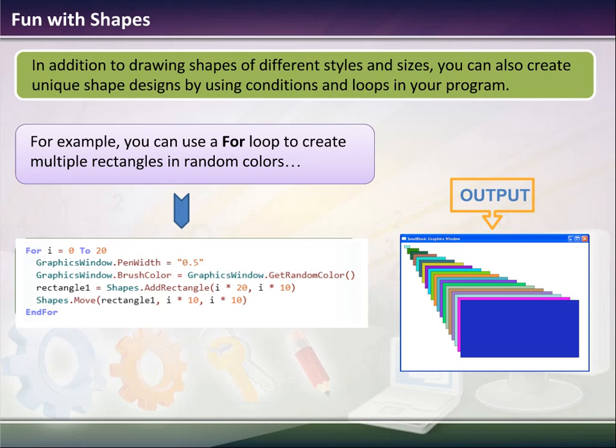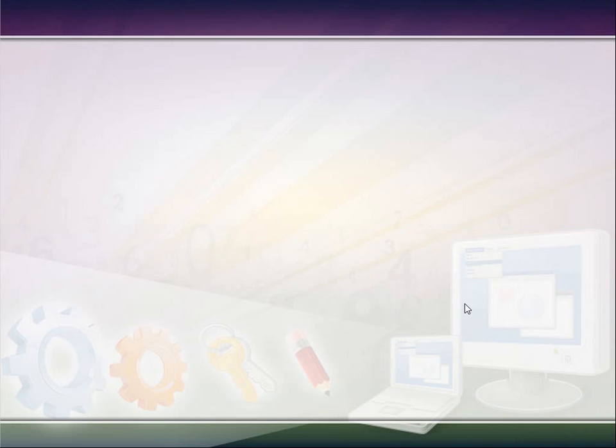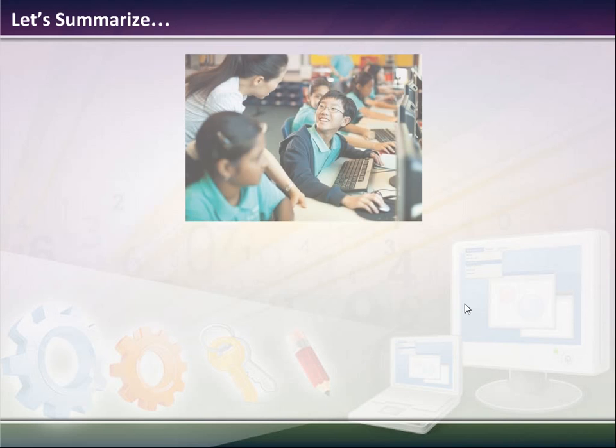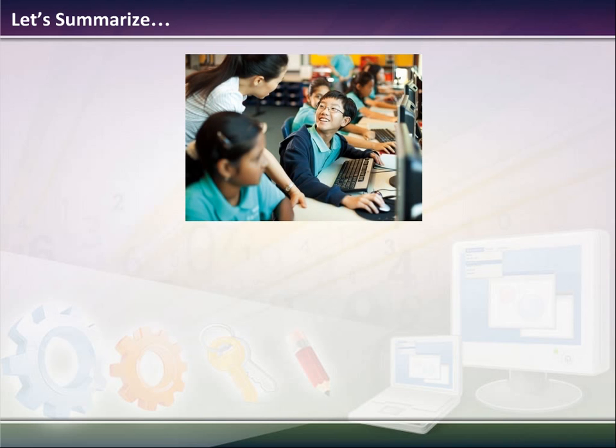Then it also moves the position. So the first position will be 10 comma 10. The next position will be 20 comma 20. And that's that corner position here. So that's why the position of this left corner keeps moving. Since we didn't clear the screen, it just layers it on top of the other one.